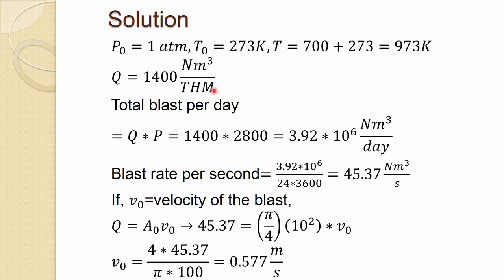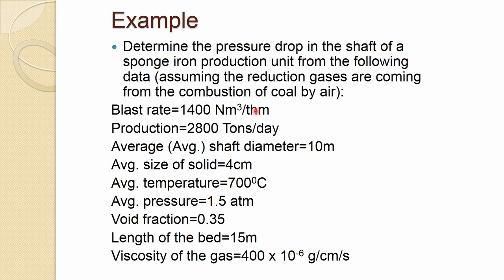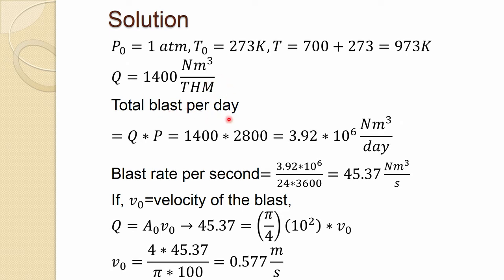Actually, though it says hot metal, here it is essentially DRI — so the pattern is per ton of DRI. Total blast per day is found by multiplying blast rate by production: this gives the total blast in normal meter cube per day. Converting day into seconds — 24 hours times 3,600 seconds — gives a blast rate of about 45.37 normal meter cube per second.